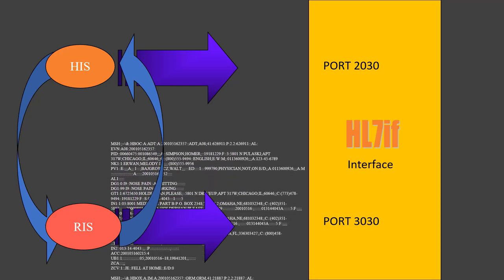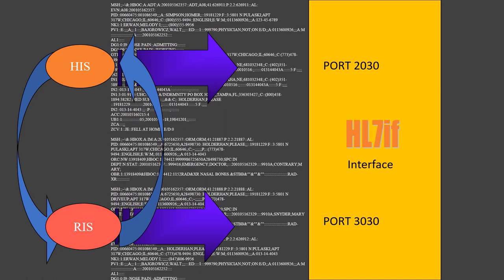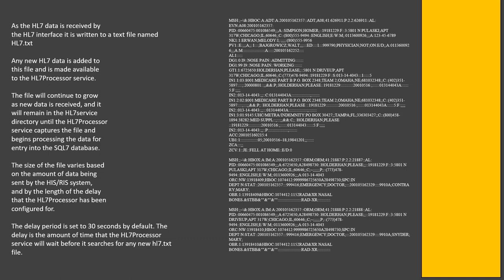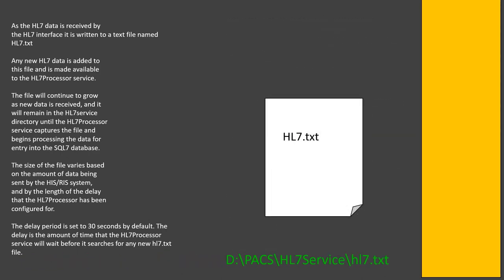The hospital information system and the radiology information system use HL7 to communicate between each other. As the HL7 data is received by the HL7 interface, it is written to the text file named HL7 text. Any new HL7 data is added to this file and is made available to the HL7 processor service. The file will continue to grow as new data is received, but it will remain in the HL7 service directory until the HL7 processor service captures the file and begins processing the data for entry into a SQL search query language database.